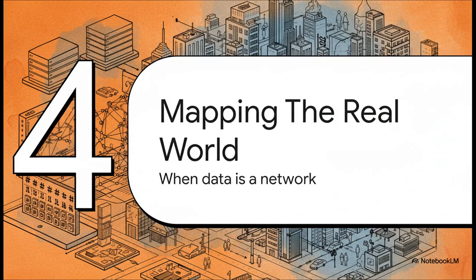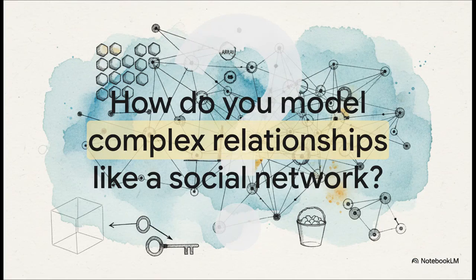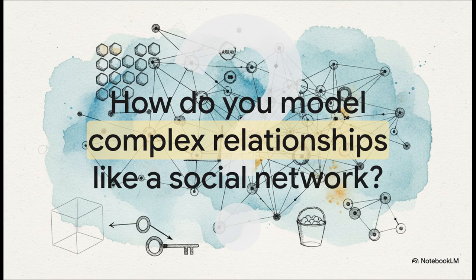So far, all our structures have been kind of linear or hierarchical. But the real world is messy. It's not always a neat list. A lot of the time, it's a complex, interconnected network. How do you model something like a social network, where you're connected to your friends, and they're connected to their friends? Or how does a GPS app represent all the cities and all the roads connecting them, each with its own distance and traffic conditions? A simple list just can't handle this web of relationships.